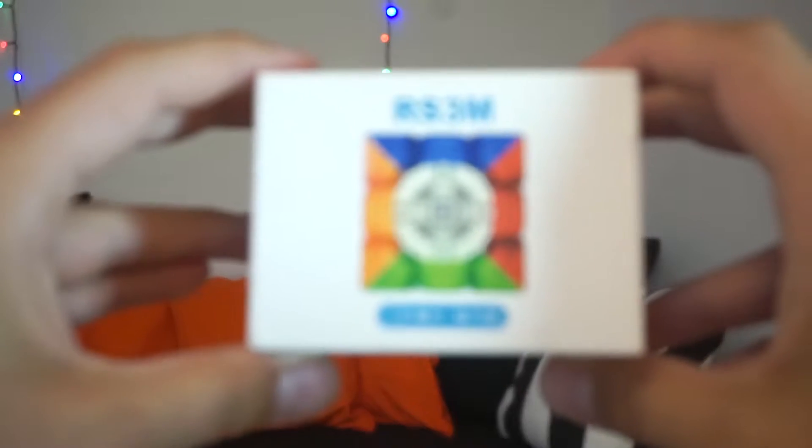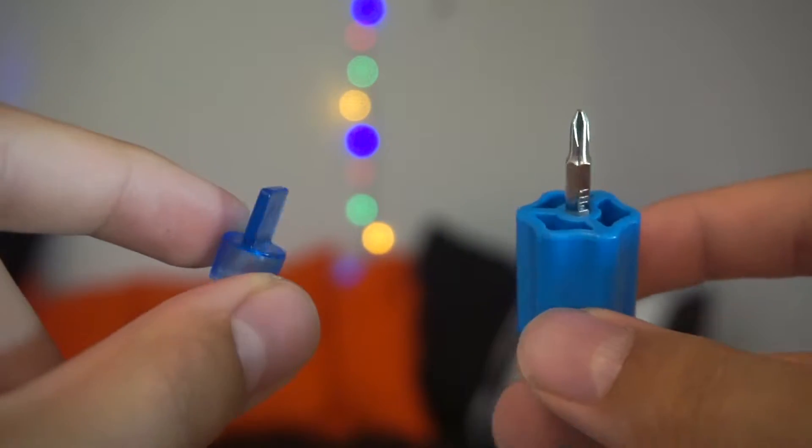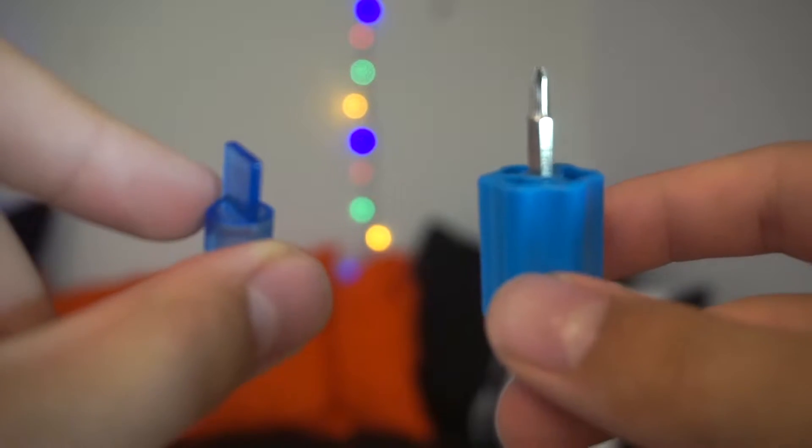In the paper box you'll find the standard Moya cards as well as the screwdriver, cube stand, an extra blue plastic piece, and the same tensioning tool you can find in the GTS3M and WRM. Very impressive for a $10 cube.